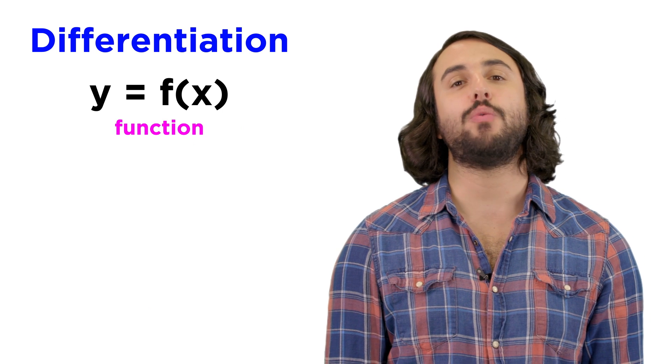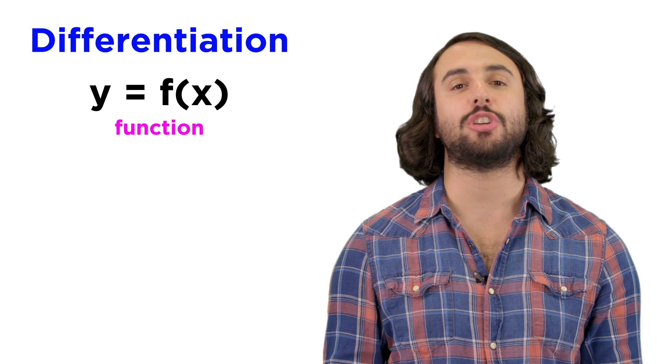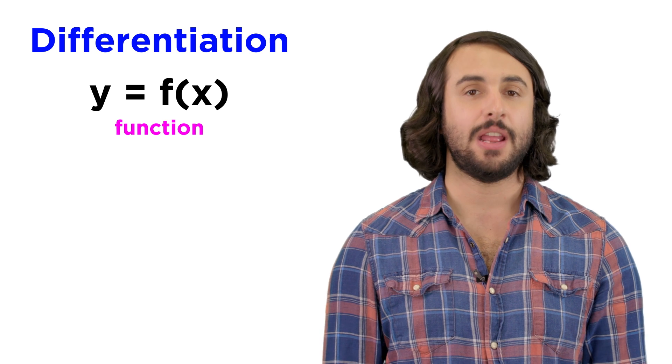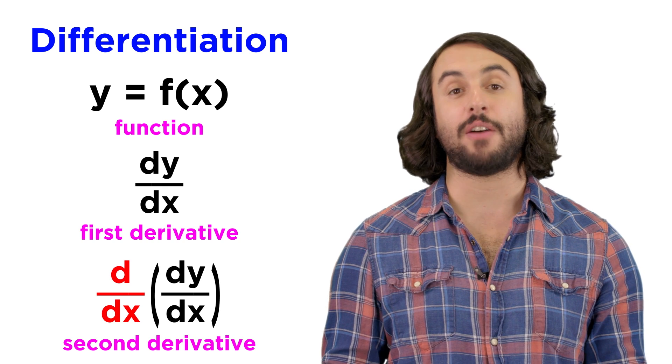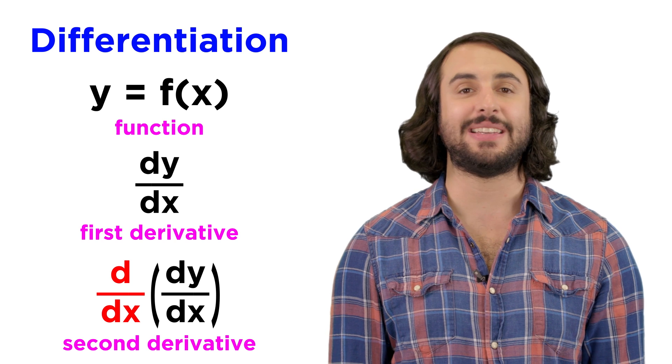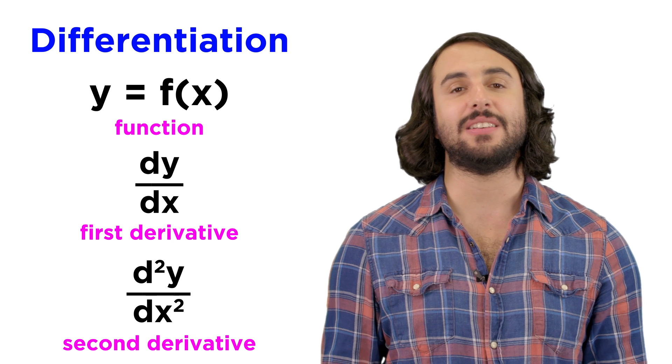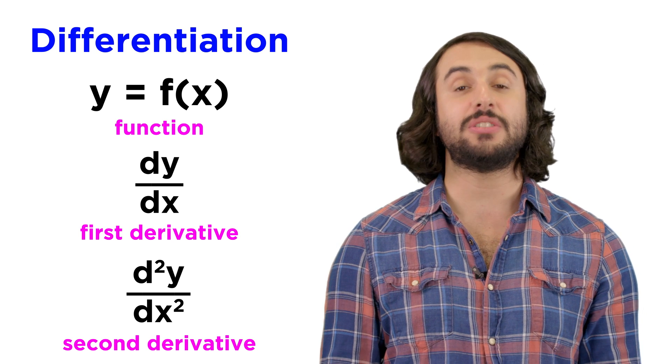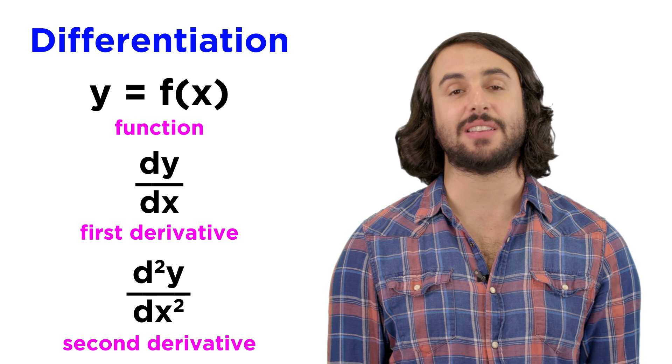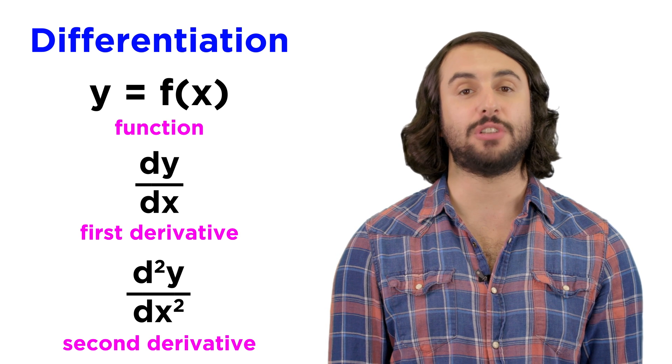In Leibniz notation, if we take the derivative of some function y equals f of x, that would be dy over dx. So if we take the derivative of that by placing d over dx out here, that can be represented as d squared y over dx squared. So this notation also indicates a second derivative, just like f double prime.